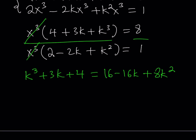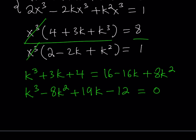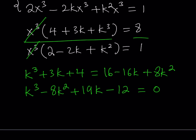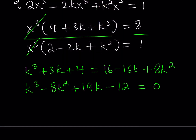Let's simplify and write this as a cubic: k³ - 8k² + 19k - 12 = 0. Now this is a cubic equation, and if you're looking for rational solutions you can look at the divisors of 12 and check each one.